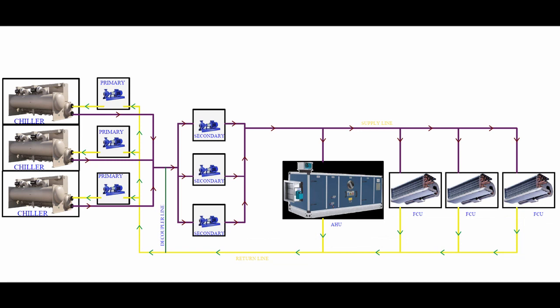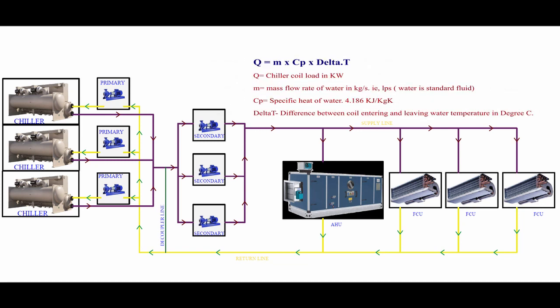Before going to the explanation, we should calculate how much chilled water flow rate is required through each equipment. Say, each chiller is having a cooling capacity of 200 tons of refrigeration. We can calculate the flow rate using the equation Q = M × Cp × ΔT. Here, Q is the chiller coil load in kilowatt. If it is 200 tons of refrigeration, you can convert tons of refrigeration to kilowatt by multiplying 3.516. So 200 × 3.516, you will get around 703.2 kilowatt.